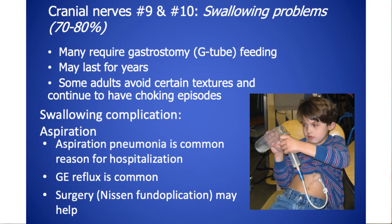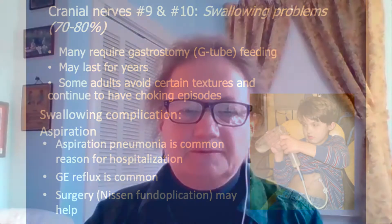Cranial nerves 9 and 10 coordinate suck and swallow. This is a very complicated system, and the swallowing problems are severe enough that 70 to 80% of people with CHARGE have issues with this. Many end up with gastrostomy tubes — where a tube feeds them directly into their stomach. These issues usually get better over time, but it may last for years. There are still some adults who are fed by gastrostomy tube because they're not able to take food by mouth without choking. Many adults with CHARGE still avoid certain textures, and choking remains a possible hazard.